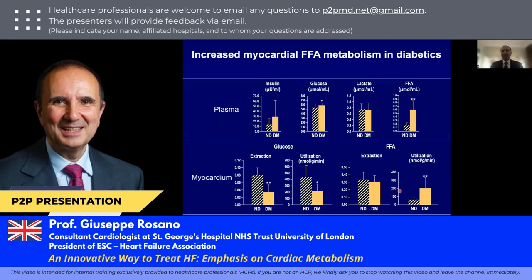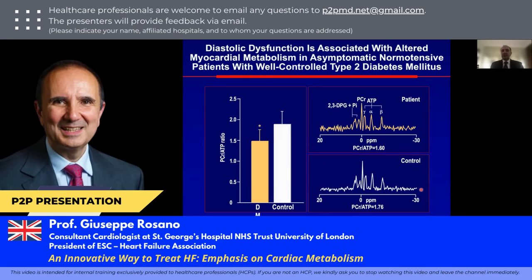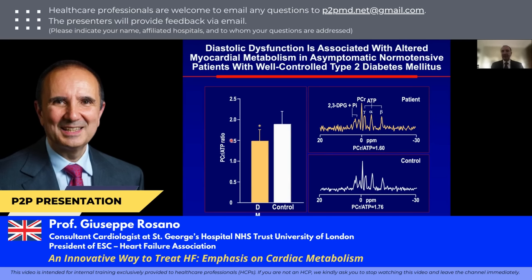The importance of these theoretical changes has been shown in vivo in humans, especially in patients with diabetes. Patients with diabetes have higher free fatty acids and higher glucose in the plasma compared to non-diabetics. But at the myocardial level, glucose utilization is significantly decreased and free fatty acid utilization is significantly increased. This translates into reduced energy production, measurable by the phosphocreatine-to-ATP ratio. Patients with diabetes mellitus have less ATP production compared to controls.